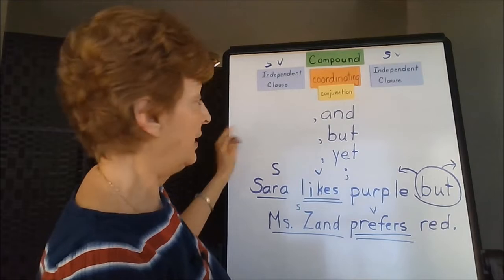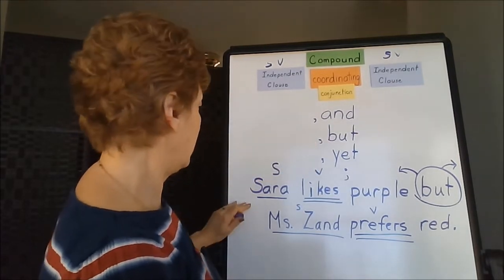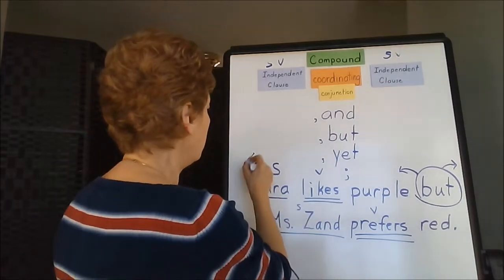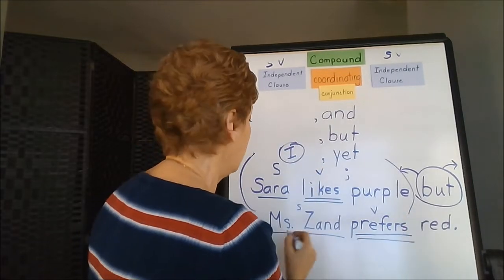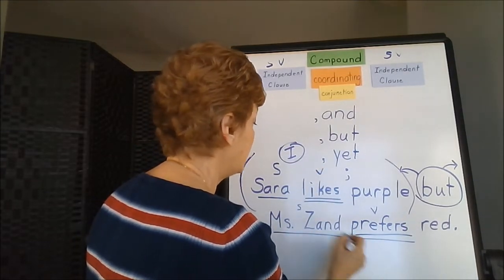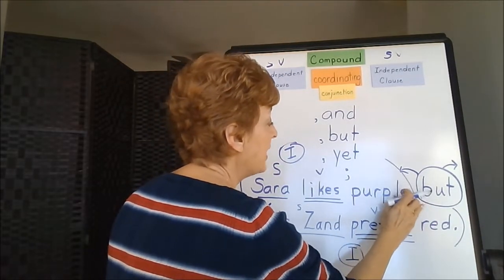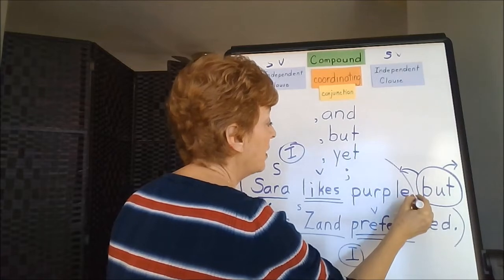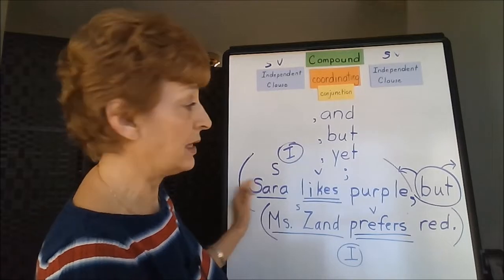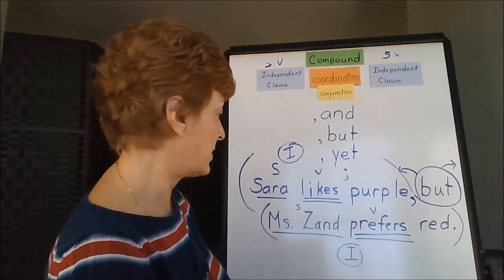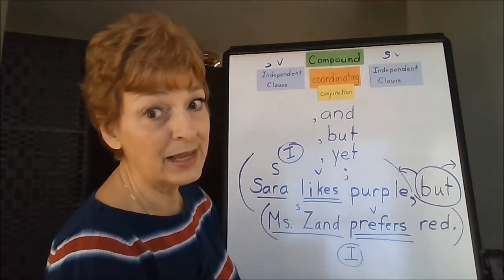The only thing we lack is the punctuation mark separating the clauses. 'Sarah likes purple' would be the first independent clause. 'Miss Zand prefers red' is the second independent clause. And between them, we need to have the punctuation mark of a comma. There's a brief pause when you read something like this because the comma tells you to pause: 'Sarah likes purple, but Miss Zand prefers red.'